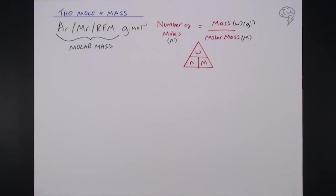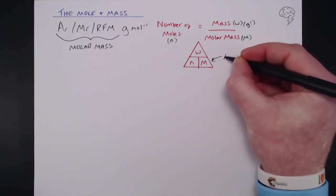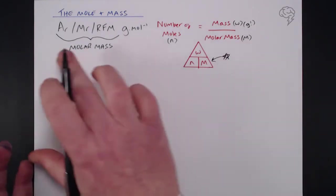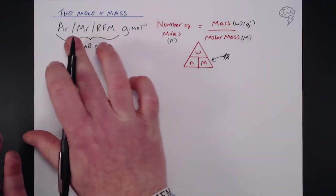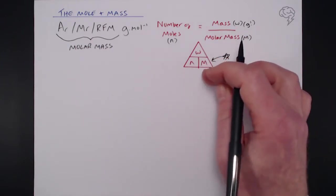Now one thing I want to stress at this point which is really important: you have always got access to molar mass. Why? Because you've got access to it in your periodic table. If it's an element you've got the AR.